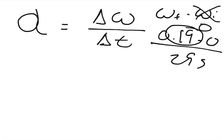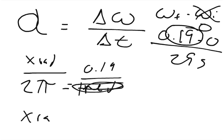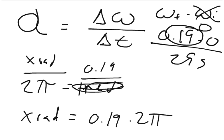We have to convert from revolutions to radians. There are 2π radians per revolution, so we set up: x radians corresponds to 0.19 revolutions. Solving for x: x radians equals 0.19 times 2π, which equals 1.194 radians.